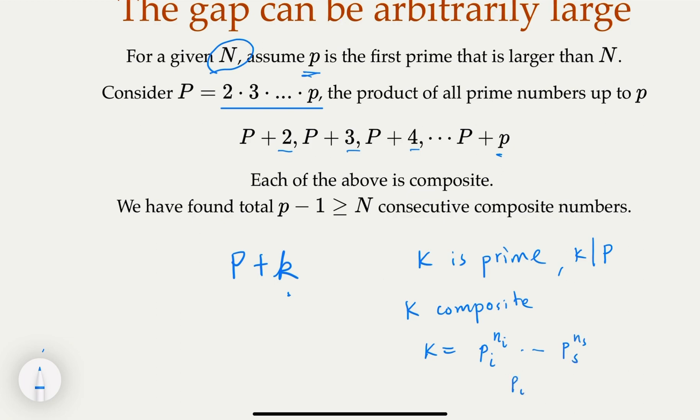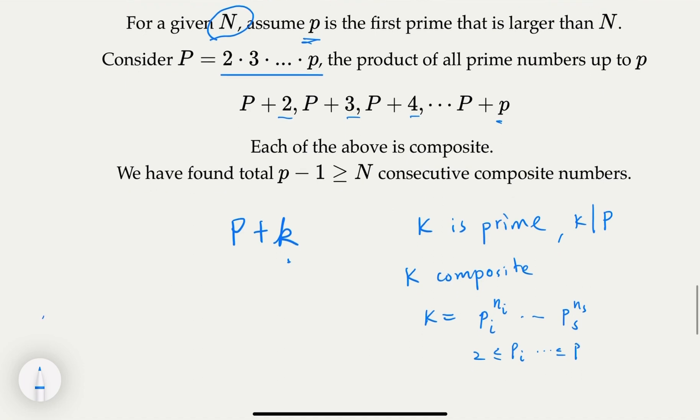In other words, whatever the case, for example this is p_i here, p_i also divides P, so p_i divides P+k. In other words, P+k is guaranteed to be composite, no matter if k is prime or not.